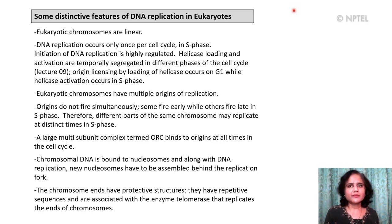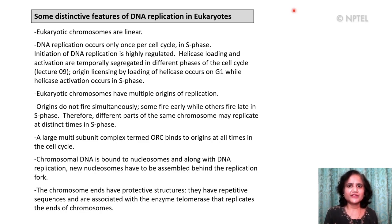There is a large multi-subunit complex termed ORC, the origin recognition complex, that binds to origins at all times in the cell cycle in eukaryotes. Chromosomal DNA is bound to nucleosomes and along with DNA replication, new nucleosomes have to be assembled behind the replication fork. The chromosome ends of these linear chromosomes have protective structures — they have repetitive sequences and are associated with the enzyme telomerase that replicates the ends of chromosomes.